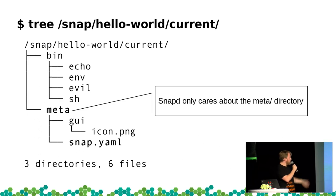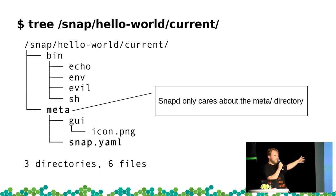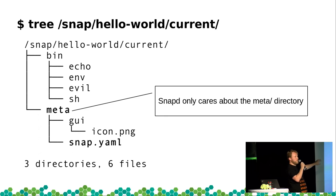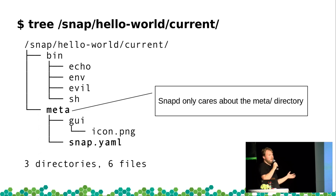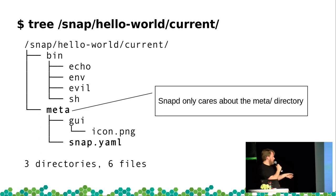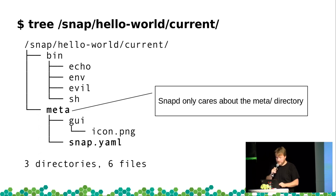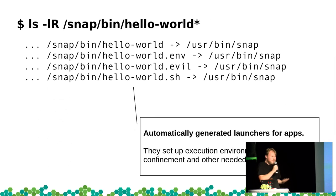A snap fits on screen with a really big font — there's nothing there, no OS, just what you care about. The layout is arbitrary — it could be whatever you want. We only care about the meta directory, and inside that we have the snap.yaml file with all the snap's information, plus some support files like icons.